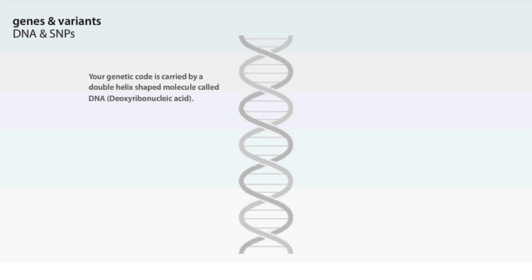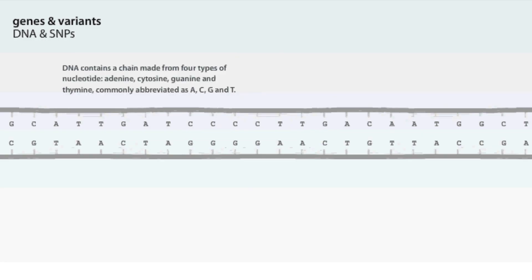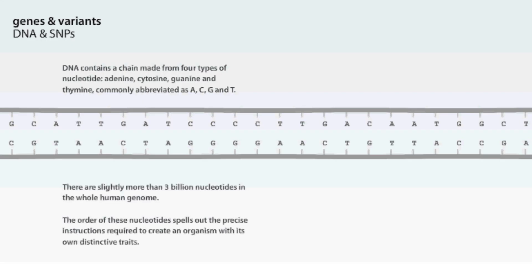Your genetic code is carried by a double helix shaped molecule called DNA, deoxyribonucleic acid. The double helix is formed from two strands, forward and reverse. DNA contains a chain made from four types of nucleotide, commonly abbreviated as A, C, G and T. There are slightly more than 3 billion nucleotides in the whole human genome. The order of these nucleotides spells out the precise instructions required to create an organism with its own distinctive traits.